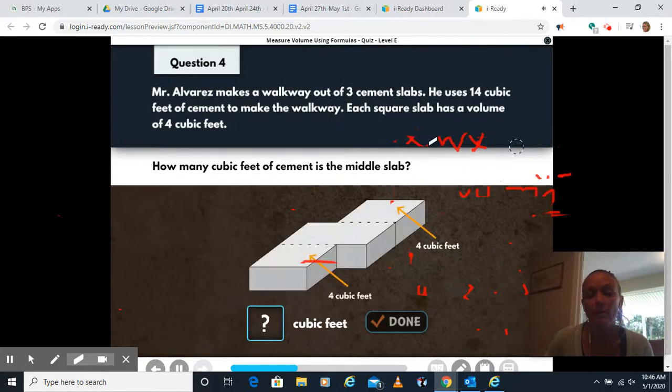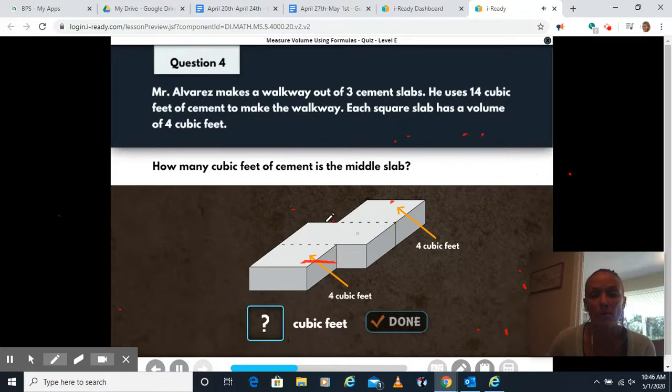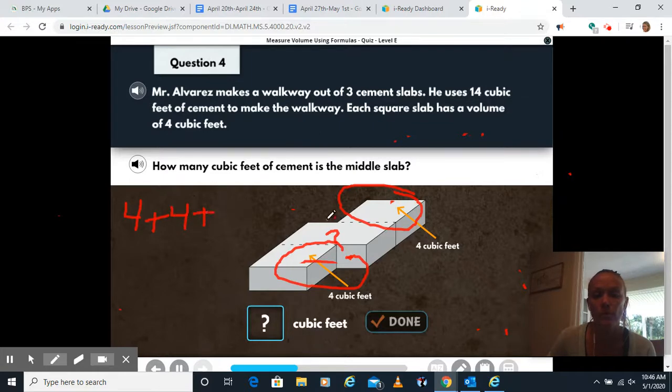Mr. Alvarez makes a walkway out of three cement slabs. He uses 14 cubic feet of cement to make the walkway. Each square slab has a volume of four cubic feet. How many cubic feet is the middle slab? So we don't know this one, right? That's what we're trying to figure out. We know that this one's four. We know that this one's four. And we know the total. So we have four plus four plus, we don't know this one. So I'll put an S for slab, equals 14.